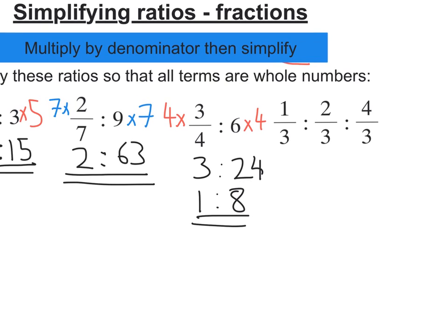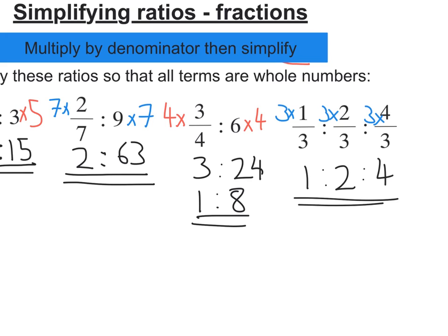Let's look at this last question. We've got three things here, but they've all got a third on the bottom. So I'm going to multiply everything by three, times three, times three, times three. Three times one divided by three, three times one is three, divided by three is one. Three times two is six, divided by three is two. Three times four is twelve, divided by three is four. So one to two to four.